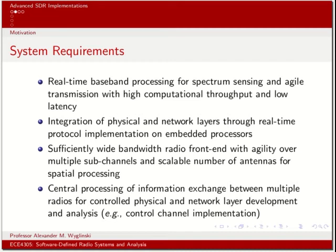Bandwidth is also important — being able to transmit potentially high bandwidth signals across a variety of different spectrum regions. Research has been conducted on devising RF front ends for software defined radio platforms that can have carrier frequencies across multiple gigahertz of frequency. And then there is the idea of central processing of information between multiple radios, because we want to evaluate how well the real-time operations of the network are performing overall.